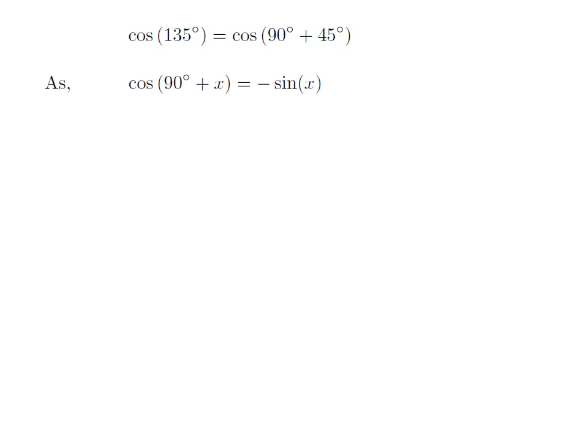As we know, the trigonometry identity cosine of 90 degrees plus x is equal to minus sine of x.